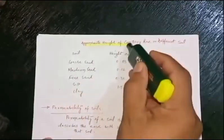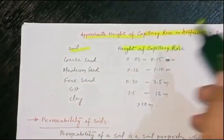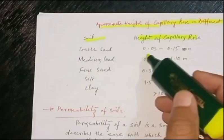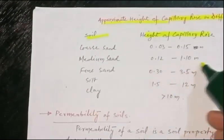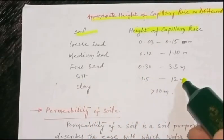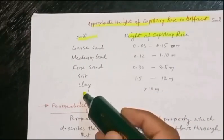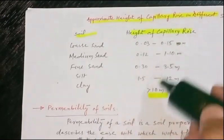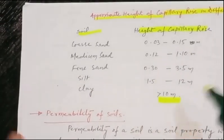The approximate height of capillary rise in different soils: coarse sand, 0.03 to 0.15 meters; medium sand, 0.12 to 1.10 meters; fine sand, 0.3 to 3.5 meters; silt, 1.5 to 12 meters; clay, more than 10 meters. From this data, we can see that as the fineness of the soil increases, the capillary height also increases.